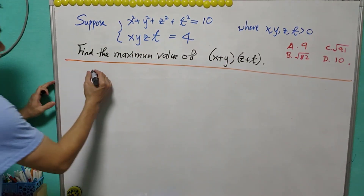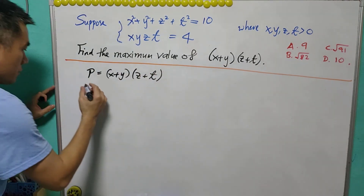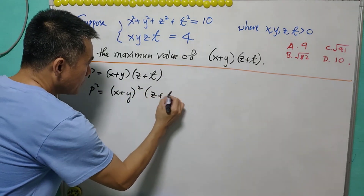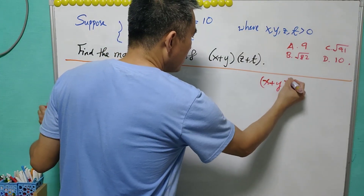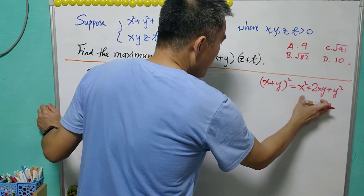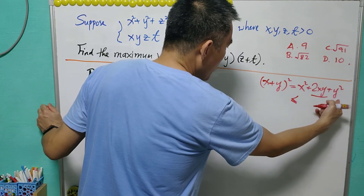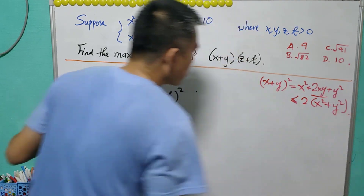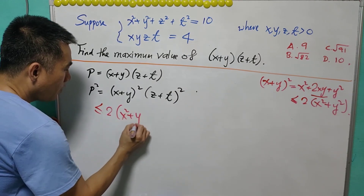We first let the expression (x + y)(z + t) equal p. So p² = (x + y)²(z + t)². We know that (x + y)² = x² + 2xy + y². Using the AM-GM inequality, 2xy ≤ x² + y², so (x + y)² ≤ 2(x² + y²).